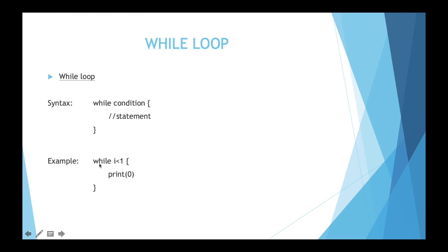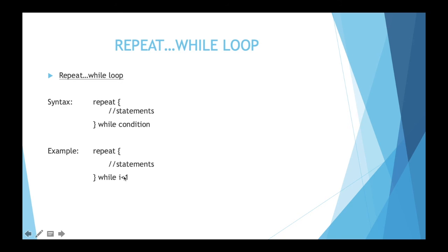Next we have the repeat-while loop, which is new in Swift but was formerly known as the do-while loop. The only difference is the keyword: instead of 'do' there is 'repeat'. The syntax is: 'repeat { statements } while condition'. The key difference from the while loop is that in repeat-while, the code executes once first and then the condition is checked, whereas in while the condition is checked first.